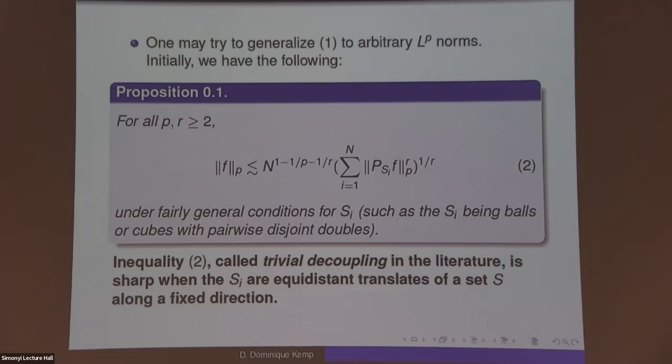Let me try to generalize Plancherel's identity to arbitrary LP norms. Initially, we have this proposition obtained by the usual interpolation between Plancherel's identity and the L infinity estimate. This inequality is called trivial decoupling in the decoupling literature.